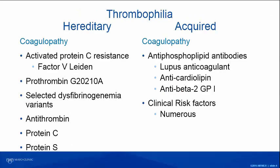This slide shows you the list of hereditary and acquired thrombophilias. Activated protein C resistance and Factor V Leiden mutation are the most common hereditary risk factors in the white population, followed by prothrombin gene mutation, then selected dysfibrinogenemias, and of course antithrombin, protein C, and protein S deficiency states. On the right side of your screen are the acquired thrombophilias, including antiphospholipid antibody syndrome.